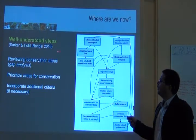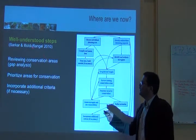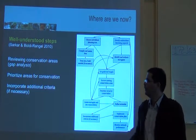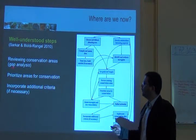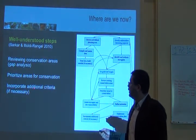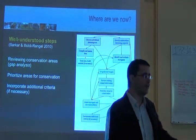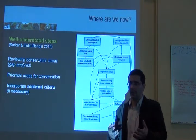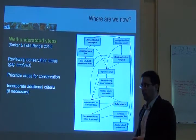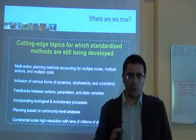There are stages of the conservation planning process that are well understood: reviewing conservation areas, doing a gap analysis — this is pretty well understood and many conservation organizations do it for many places. We know how to prioritize areas using optimization algorithms, and we also know how to incorporate additional criteria like costs, constraints, conflict resolution with human population density, or opportunity costs. These are the well-understood steps.